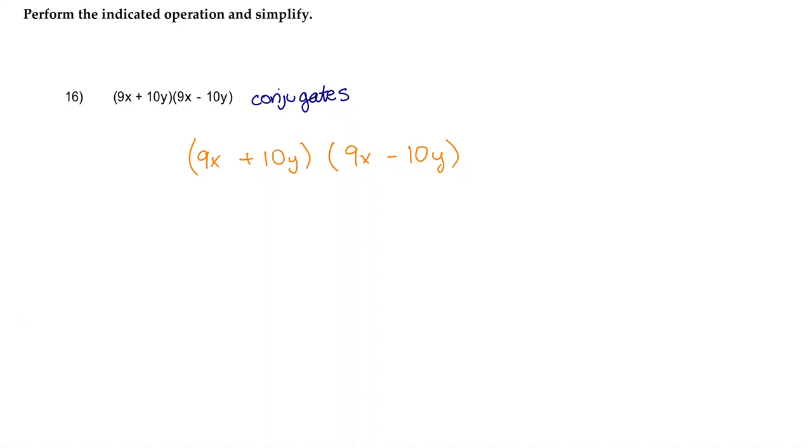Whenever you multiply two binomials together, you use the acronym FOIL, F-O-I-L, which stands for First, Outer, Inner, Last. And this refers to your first two terms, your outer two terms, your inner two terms, and your last two terms.